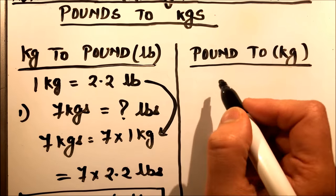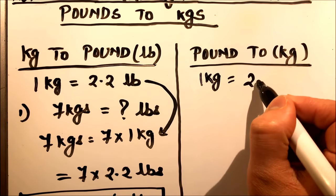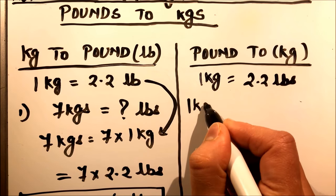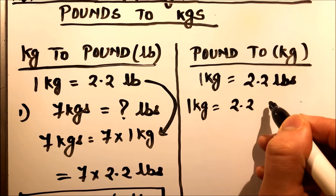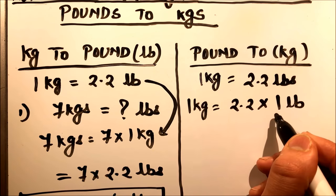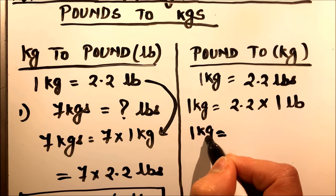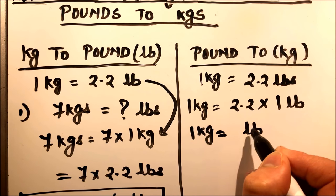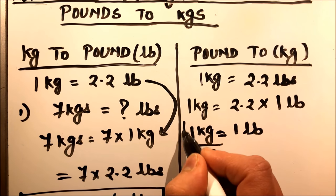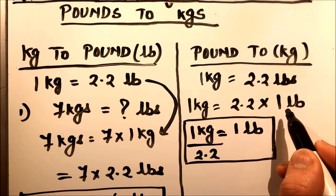Now let us learn how to convert pounds to kilograms. We know the basic relation: 1 kilogram is equal to 2.2 pounds. From this relation, we can write 2.2 pounds as 2.2 times 1 pound. So 1 pound will be equal to 1 over 2.2 kilograms. This is the relation we derive from the basic relation, and we are going to use it to convert pounds to kilograms.